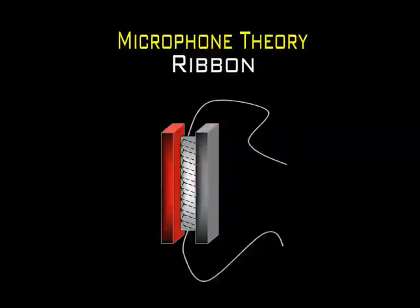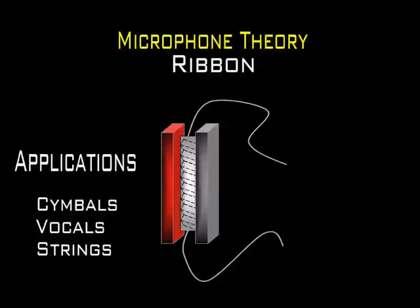Ribbon mics operate under the same principle of electromagnetic induction. In ribbon microphones, a narrow strip — generally aluminium — is suspended within the field of a strong, permanent magnet. When sound waves cause the ribbon to vibrate within the field, the motion of the ribbon cuts the lines of the magnetic force and causes a current to be induced in the ribbon. Since aluminium conducts electricity, this rather small current is available at the ends of the ribbon and can be sent down a cable and amplified. They do not require external power, but they have much lower sensitivity than condensers. Ribbons can be destroyed in an instant if you blow into them.